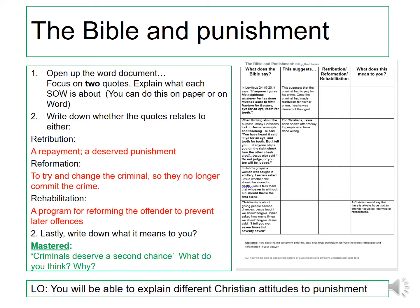Now we have got four quotes on the worksheet. I want you to look at those four quotes and do two minimum — you can do all four if you wish. The first quote we're going to look at is: 'If someone injures his neighbour, whatever he has done, the same must be done to them. Fracture for fracture, eye for an eye, a tooth for a tooth.' For that quote, you're going to explain what this suggests, then decide whether it's retribution, reformation, or rehabilitation. For this particular one, it says what he has done must be done to him — that's a like-for-like punishment, so that is retribution. Then write down what it means to you.